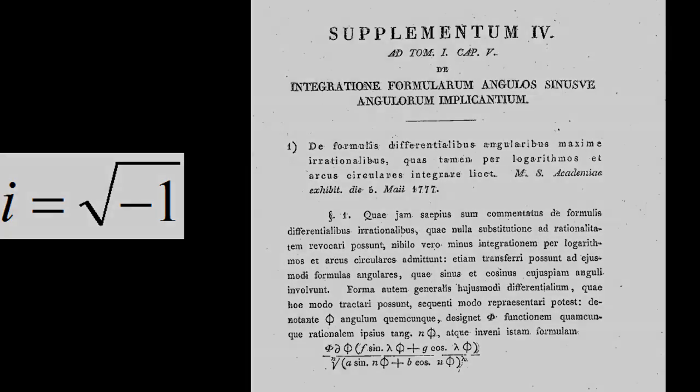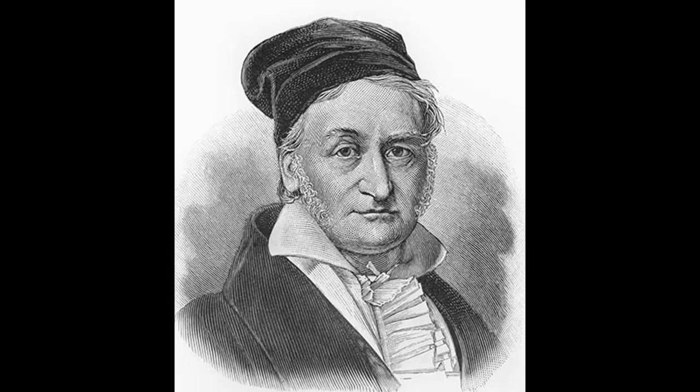And in the 19th century, Carl Friedrich Gauss, a German mathematician whose contributions to mathematics gained him the title, the greatest mathematician since antiquity, coined the term complex number for imaginaries in an 1831 paper.